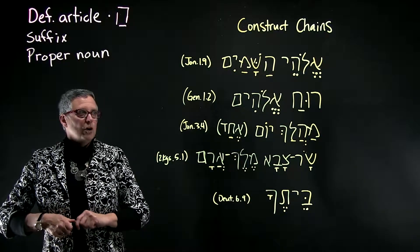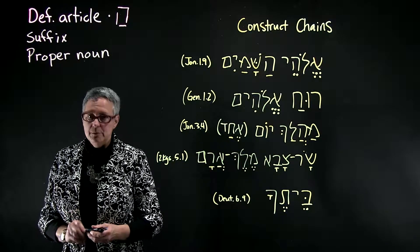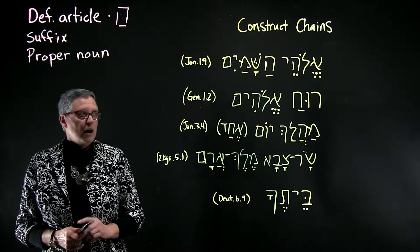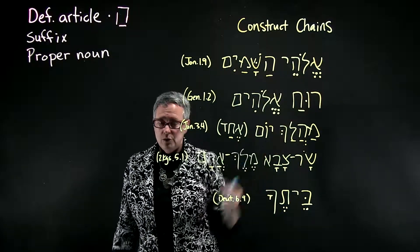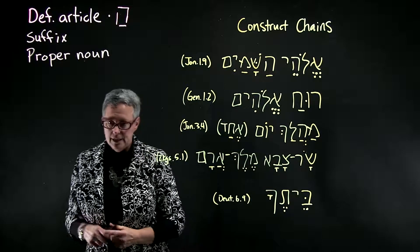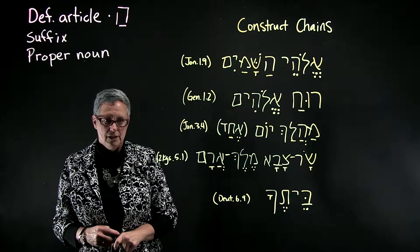The last word in the construct chain is in its absolute form. The other words in the chain are seen in construct form and to review the construct forms you can see chapter 19 and also a little bit more detail in chapter 5.